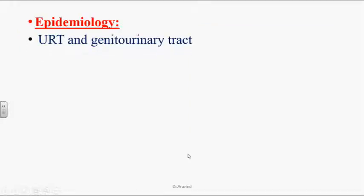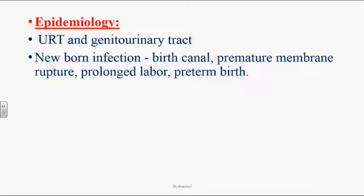Epidemiology: these organisms are seen in the upper respiratory tract and genitourinary tract. In newborn infection, babies are more prone to infection through the birth canal during normal delivery, acquiring it from the mother's genital tract. About 25% of pregnant women are positive for these organisms in the genital area. Susceptible conditions include premature membrane rupture, prolonged labor, and preterm birth.